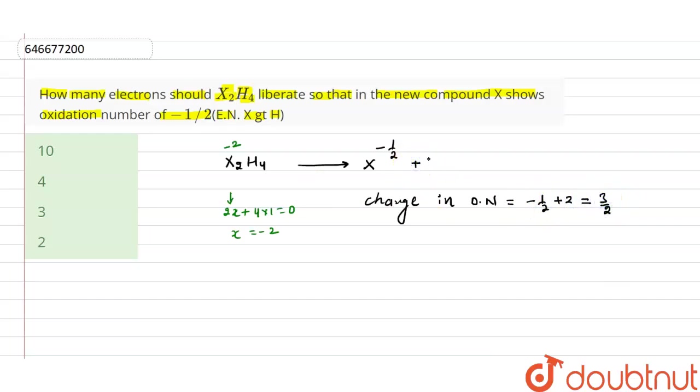we have to write 3/2 electrons on the right-hand side. But to balance, we multiply by 2, so this becomes 3. We multiply by 2 to balance this equation. The 2 gets cancelled out, meaning total 3 electrons will be liberated in this reaction. That is option number 3